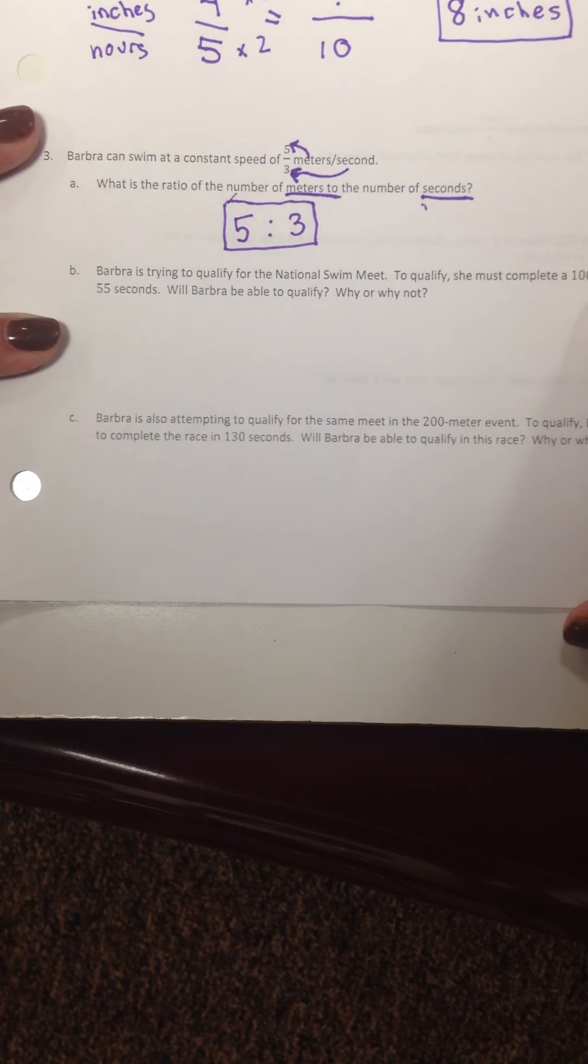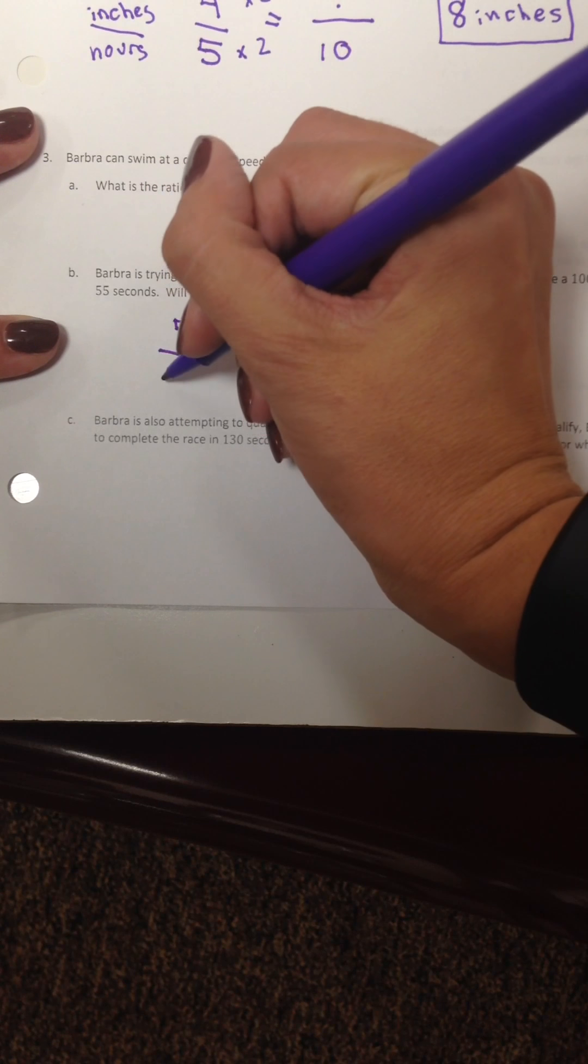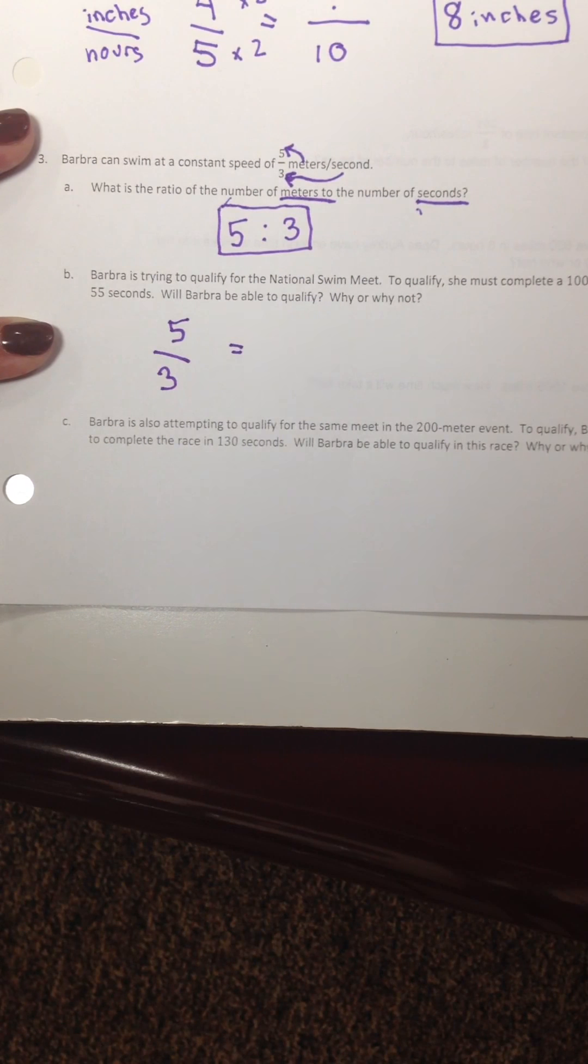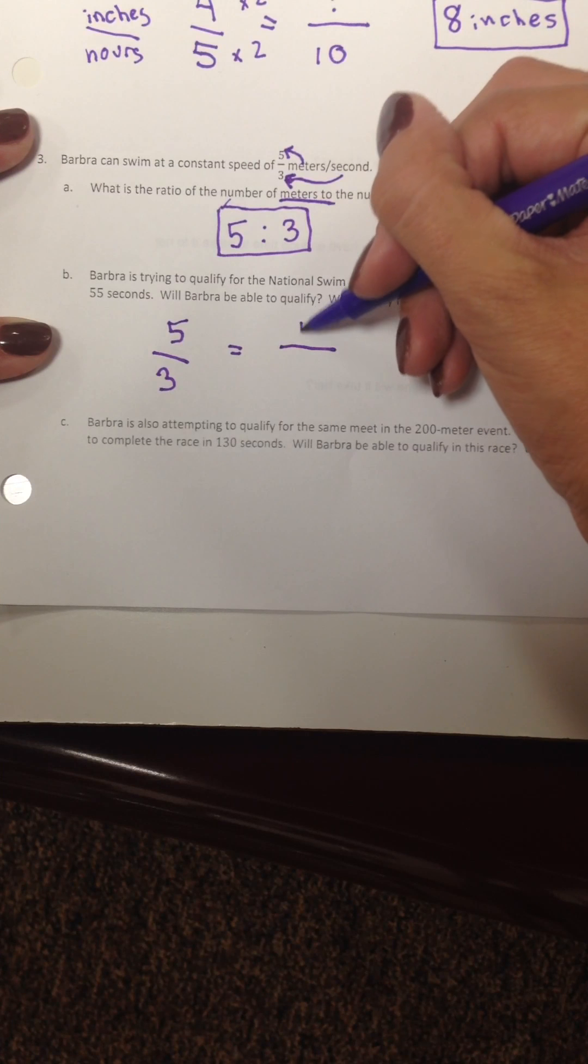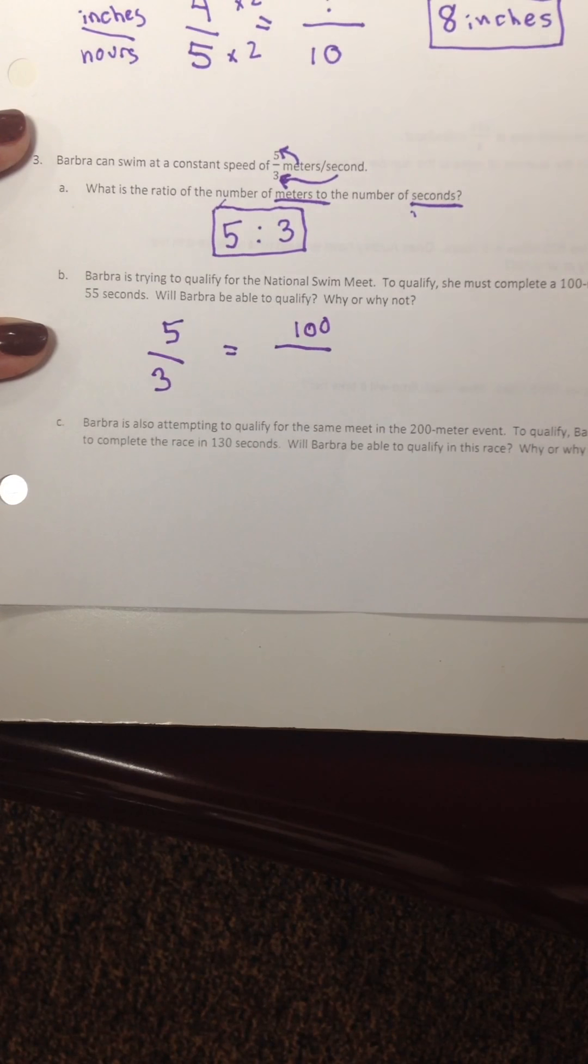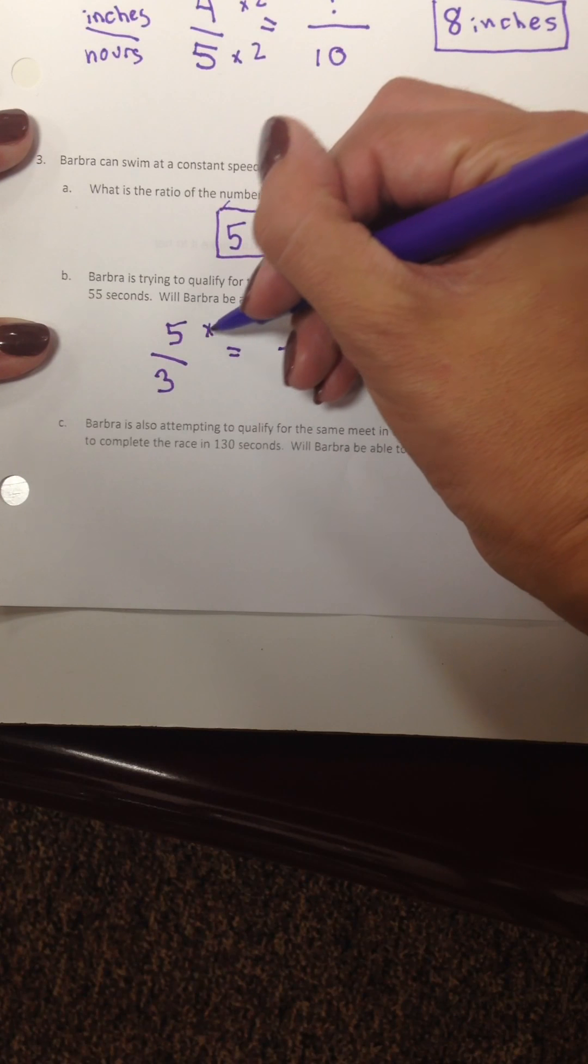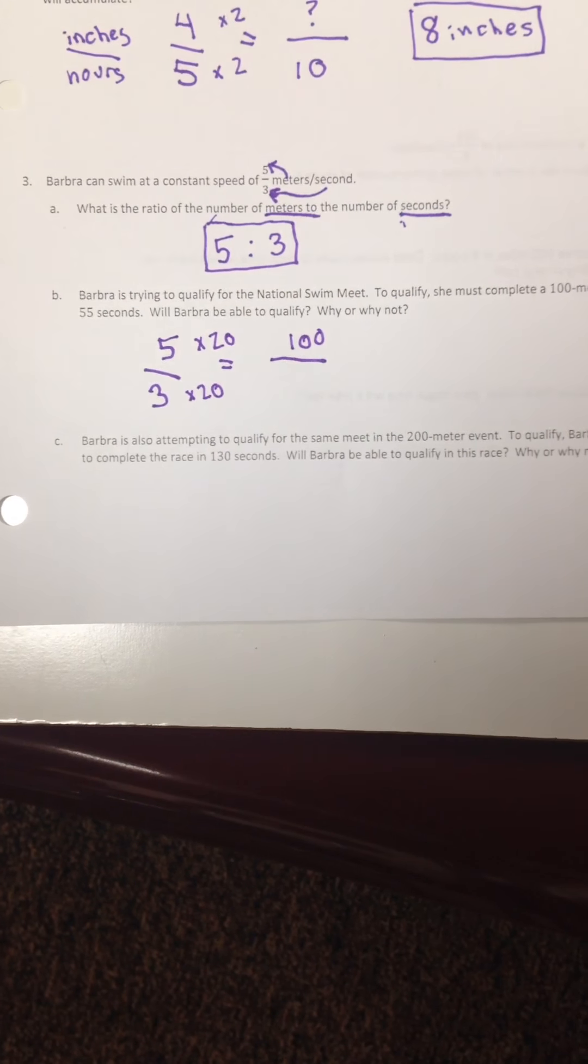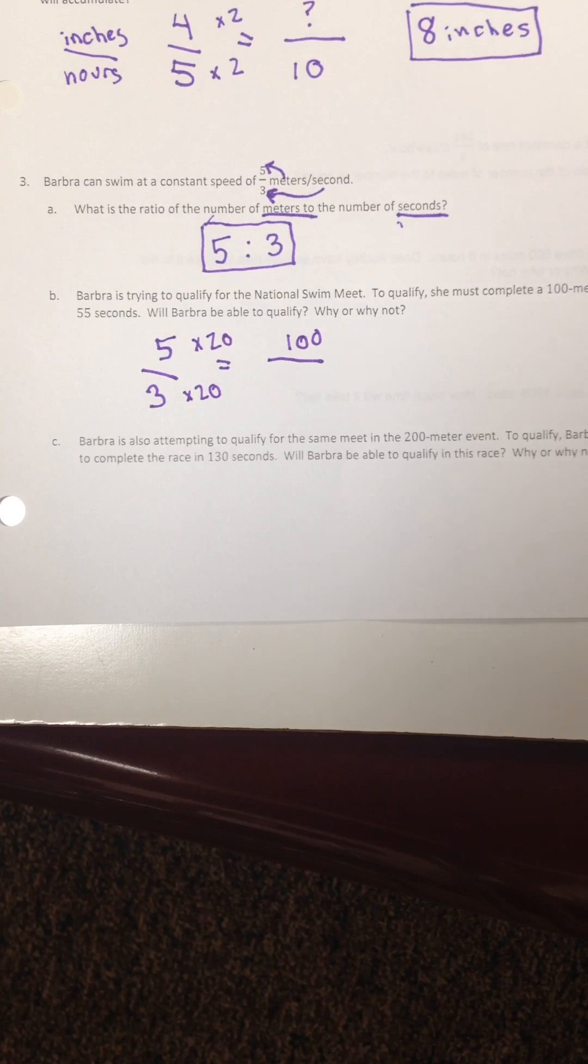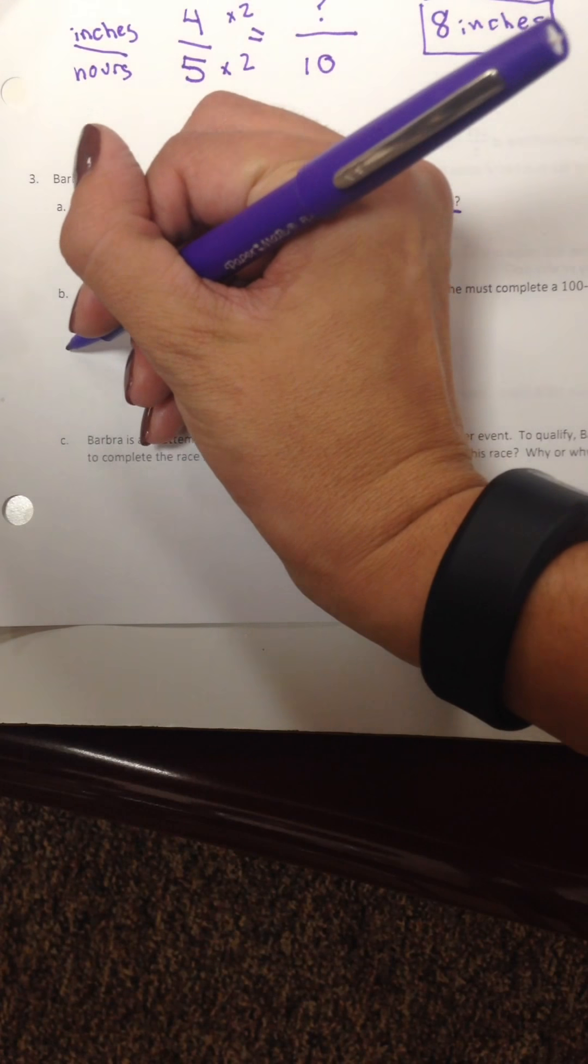It's a 100 meter race in 55 seconds. We know that she goes 5 meters every 3 seconds. So let's see how long it will take her to get to 100 meters. So 5 times what is 100? I would say 5 times 20 would be our scale factor times 20. So then we would need to do 3 times 20. And you would figure out that 3 times 20 is 60. So 100 meters would take her 60 seconds. We know that this is meters over seconds.